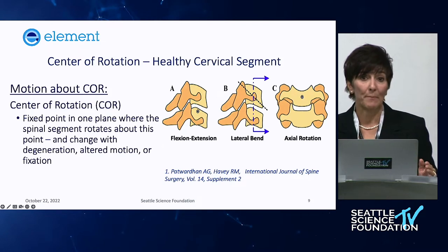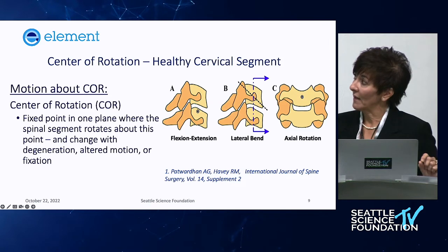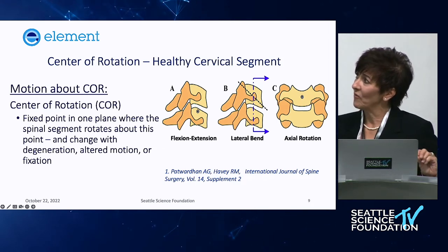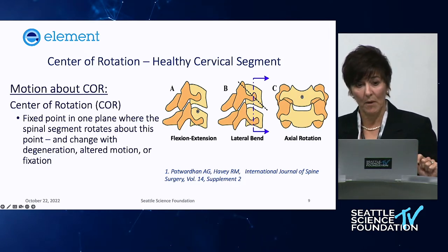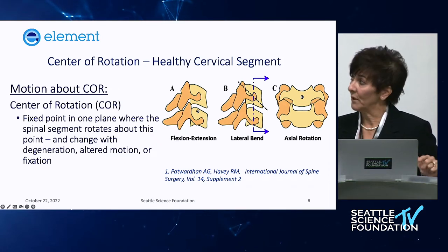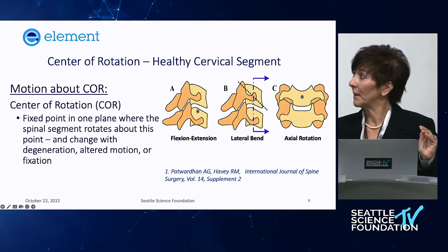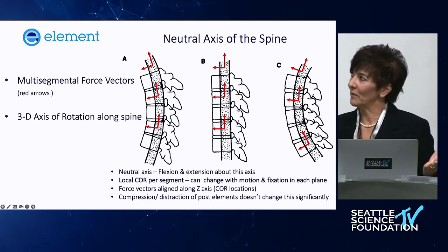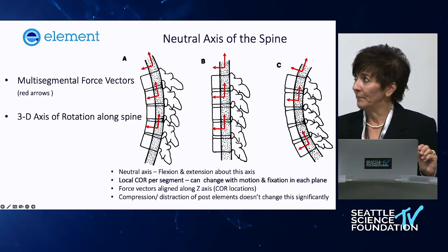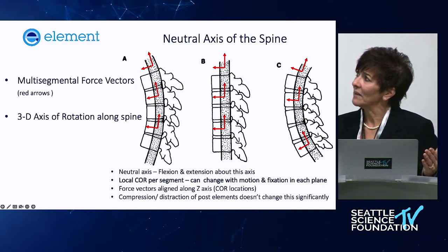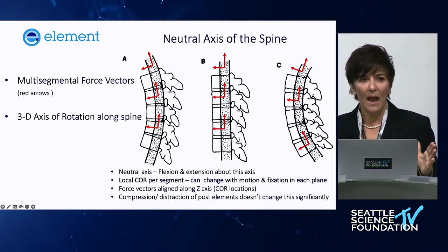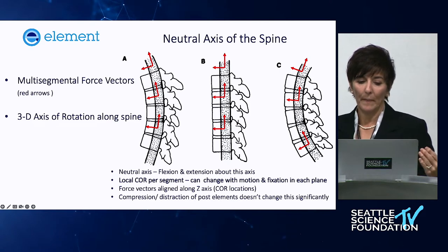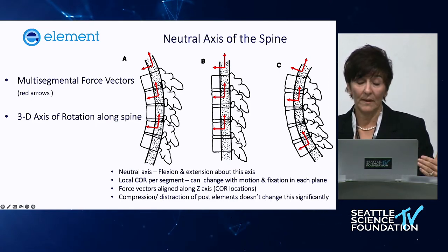Dr. Pat Warden has done incredible work mapping this out kinematically. In native tissue during flexion-extension, the center of rotation is not in the middle of the disc — it's actually about halfway between the tip of the spinous process and the anterior margin of the vertebral body, lying in the inferior vertebral body. It's different in the lateral bending plane and the rotational plane. When thinking three-dimensionally, we talk about the neutral axis — an imaginary three-dimensional column aligning with the curvature of the spine at that halfway point.